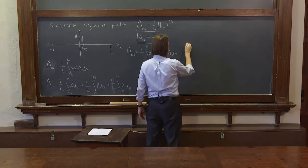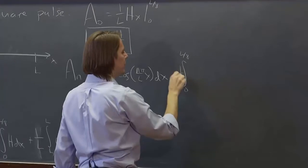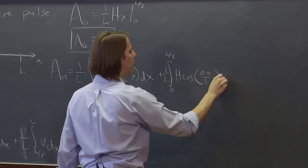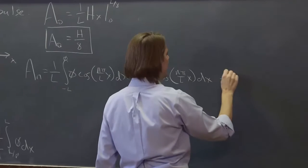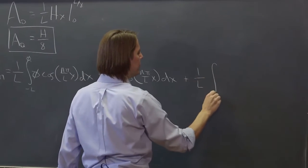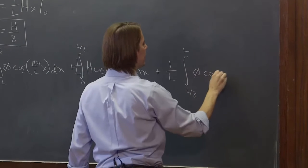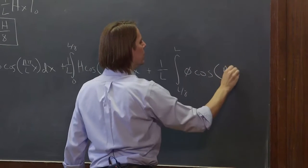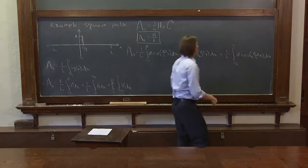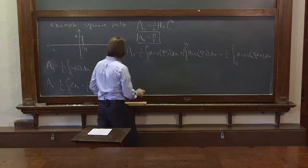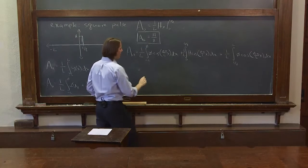So the integral from 0 to l over 8, and now here 1 over l, it's h times the cosine of those harmonics, plus 1 over l times the integral from l over 8 to l of again 0 times the cosine harmonics n pi over l x. So 0, 0, the only thing that matters is this.